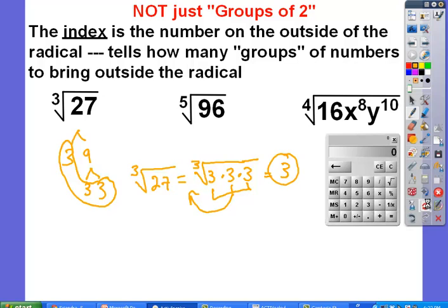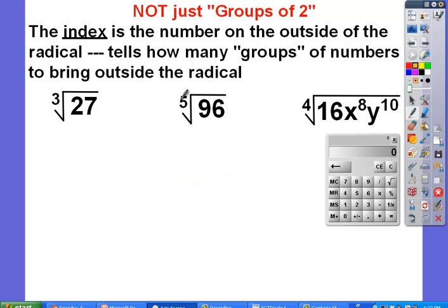Alright, so the second problem here, the fifth root of 96. I'm going to again want to find my factor trees. Here, let me use a different color, blue. Alright, 96. I know I can divide it by 2, so 96 divided by 2 gives me 48. 48 I know is 2 and, well, I think it's 24. There you go, 24, 2 and 12, 2 and 6, 2 and 3.